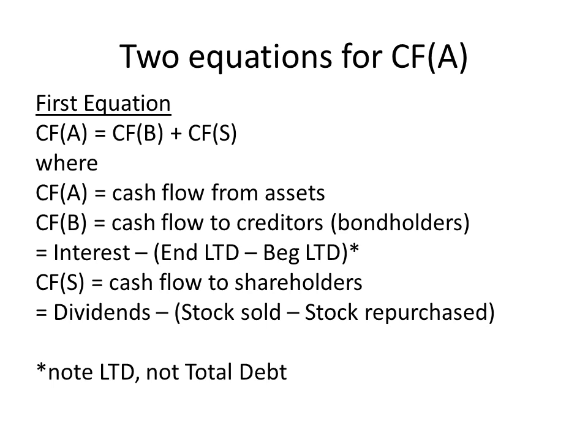How do we find net new borrowing? We take our ending long-term debt and subtract our beginning long-term debt. Students often get confused and think we're talking about total debt, but that's not the case — it's long-term debt. Cash flow to shareholders is similar: we're looking at dividends, just as interest is cash flow to creditors, and then we subtract net new stock issued, which is simply stock sold minus stock repurchased.